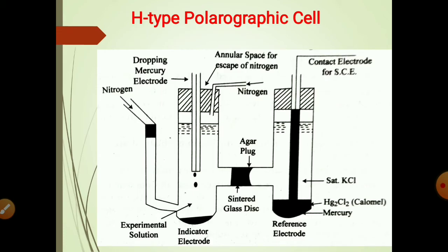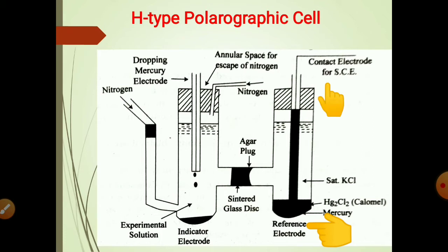H-type polarographic cell. The dropping mercury electrode, that is the indicator electrode, is inserted in the experimental solution, placed in one arm of the cell. The reference electrode, like the saturated calomel electrode, that is SCE, is placed in another arm, as shown in the figure. These two arms are separated by a cross membrane,